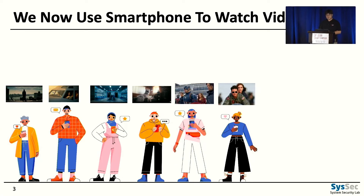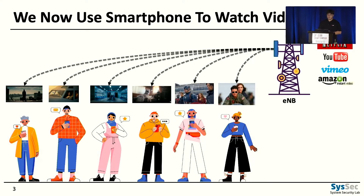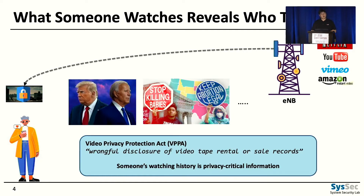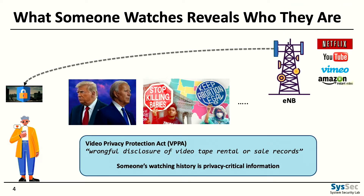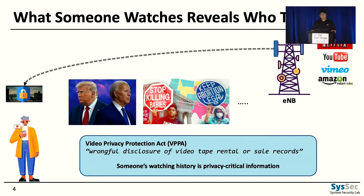Nowadays we all use smartphones to watch videos from YouTube, Netflix, and so on, connected to the cellular network. One's watching history tells one's political and financial interests, personality, and social status. The Video Privacy Protection Act prevents the disclosure of one's watching history, which shows it is indeed important to be protected.